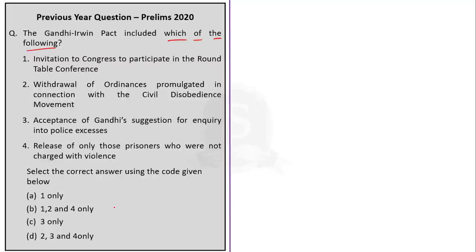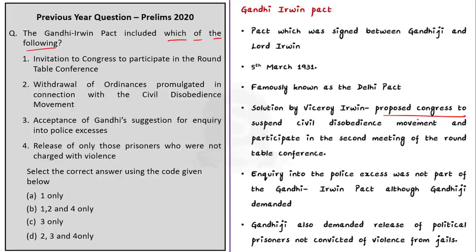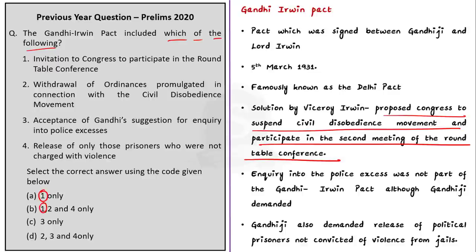The options are combinations of these statements. Option A is 1 only. Option B is 1, 2 and 4 only. Option C is 3 only. Option D is 2, 3 and 4 only. With this kind of question where we are given many statements and the options are combinations, we can apply the elimination technique. Let us take the first statement: Invitation to Congress to participate in the round table conference. This statement is very easy to assess.